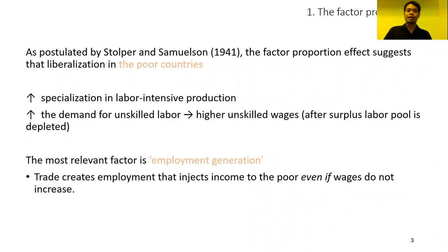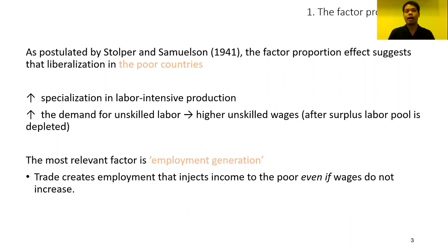Let's look at the first one. As postulated by Stolper and Samuelson's model, the factor proportion effect is that trade liberalization in developing countries will increase specialization in labor-intensive production and raise the demand for unskilled labor, resulting in higher wages after the pool of labor surplus is depleted. However, the most relevant factor here is the ability to generate employment. Trade creates employment that injects income to the poor even if wages do not increase.